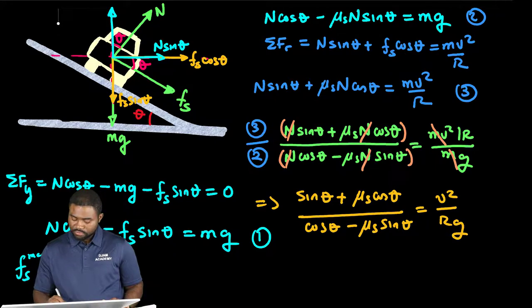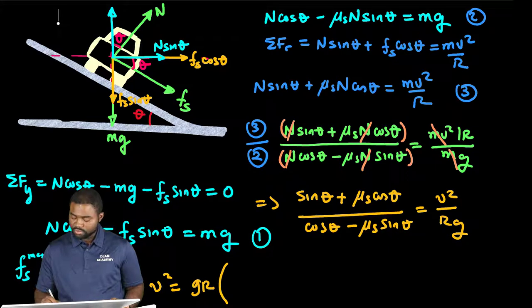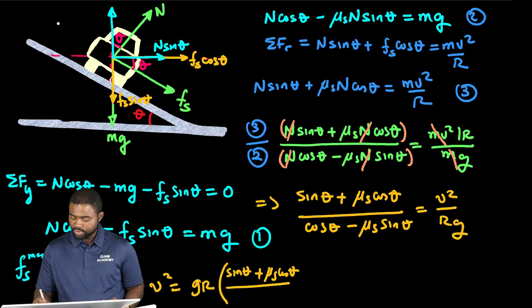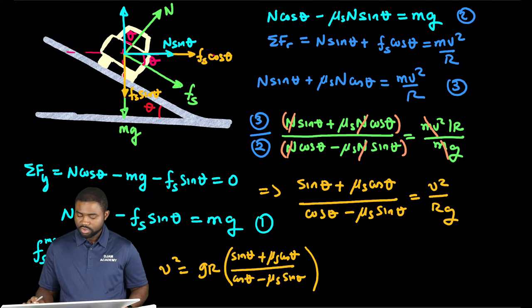Hence, v squared will be equal to gR times sine theta plus mu_s cosine theta divided by cosine theta minus mu_s sine theta.